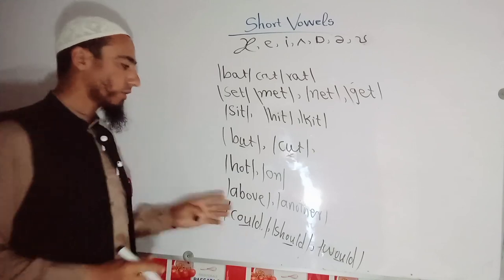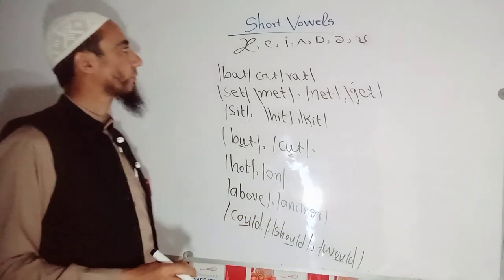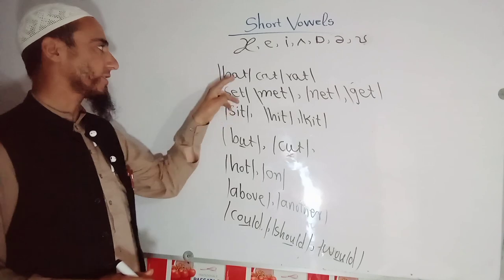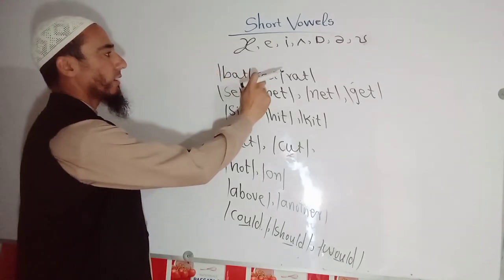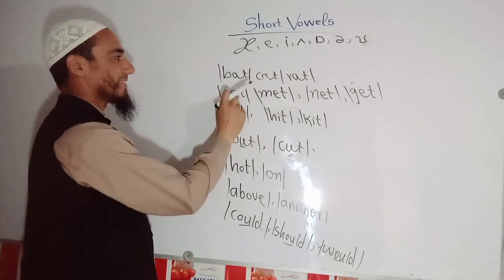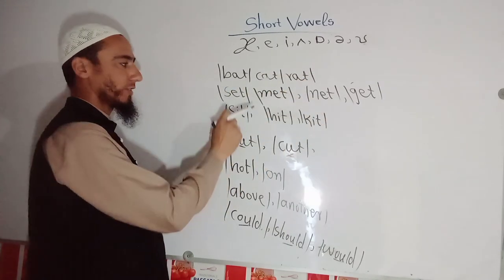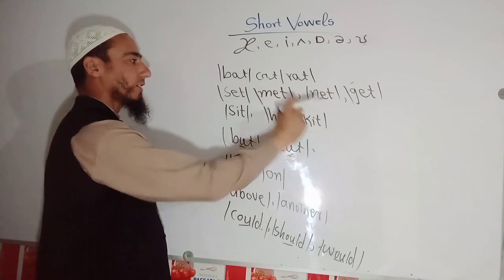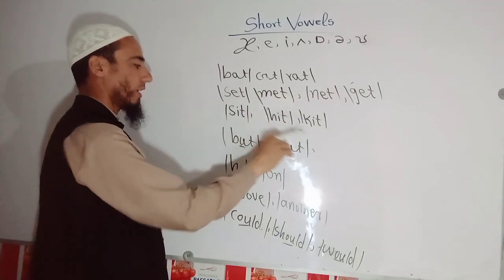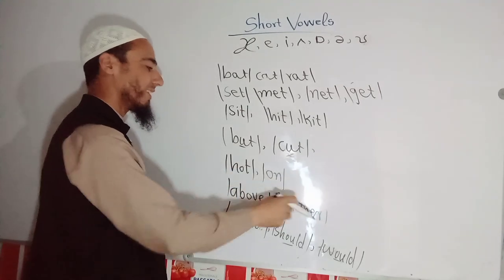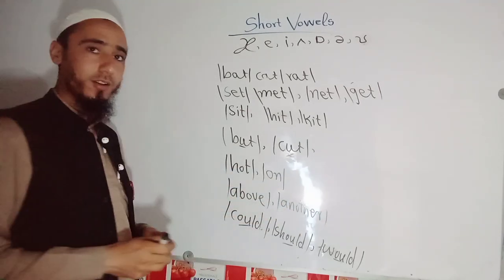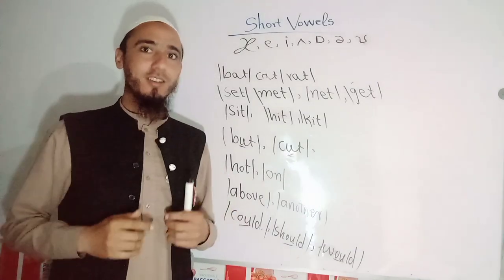So let me repeat all these sounds one by one: bat, cat, set, met, net, get, sit, hit, kit, but, cut, hot, on, above, another, could, should, and would. If you want to write the whole word with its IPA symbol, then you can write it out.